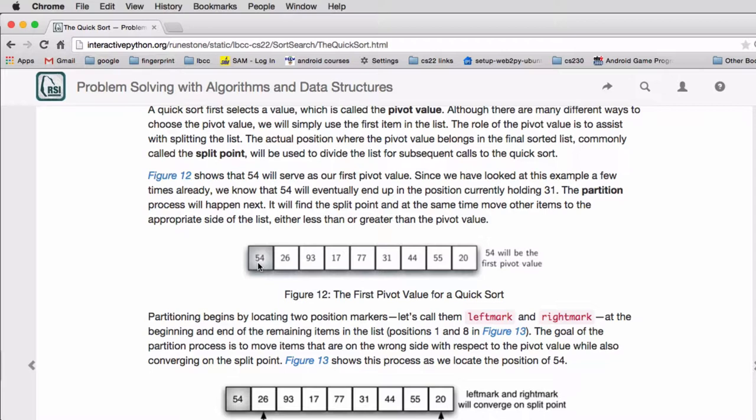Now the idea is that we're going to split the list so that the first half of the list when we're done, up to 54, will all be to the left of 54. And then there will be the value 54. And then to the right of the 54 will be all the numbers that are greater than 54.